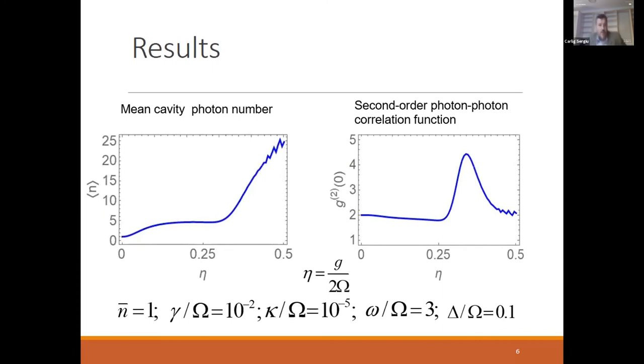What we see here: we start with a mean photon number about unity, and with increasing of the parameter eta we have an increase of this photon number. For eta more than one divided by four, we have an increase. In this case, we have an increase of photons in the cavity with increasing eta.